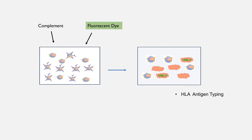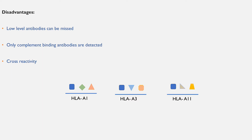This technique is used for HLA antigen typing using several known HLA antibodies. It is also used for measurement of panel reactive antibodies and for CDC cross-match — identifying HLA antibodies with help of CDC technique. There are some disadvantages: low levels of HLA antibodies can be missed, as we need a sufficient number of stained cells for a positive reaction. Similarly, this technique will only identify complement-binding antibodies; non-complement binding antibodies will be missed.